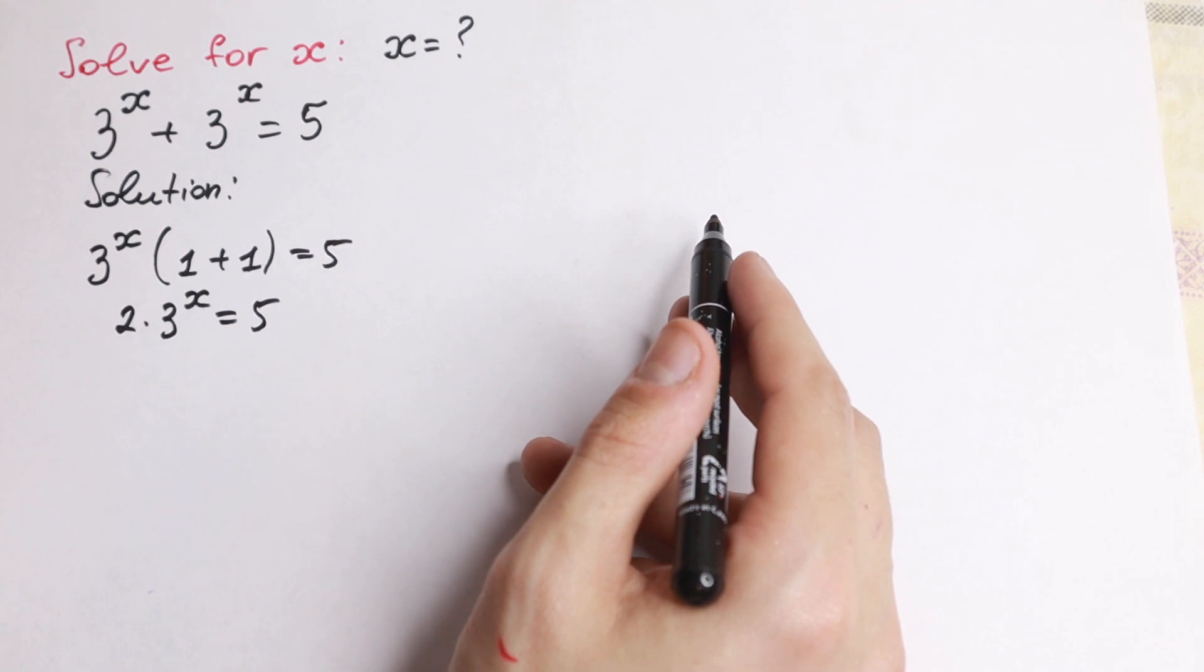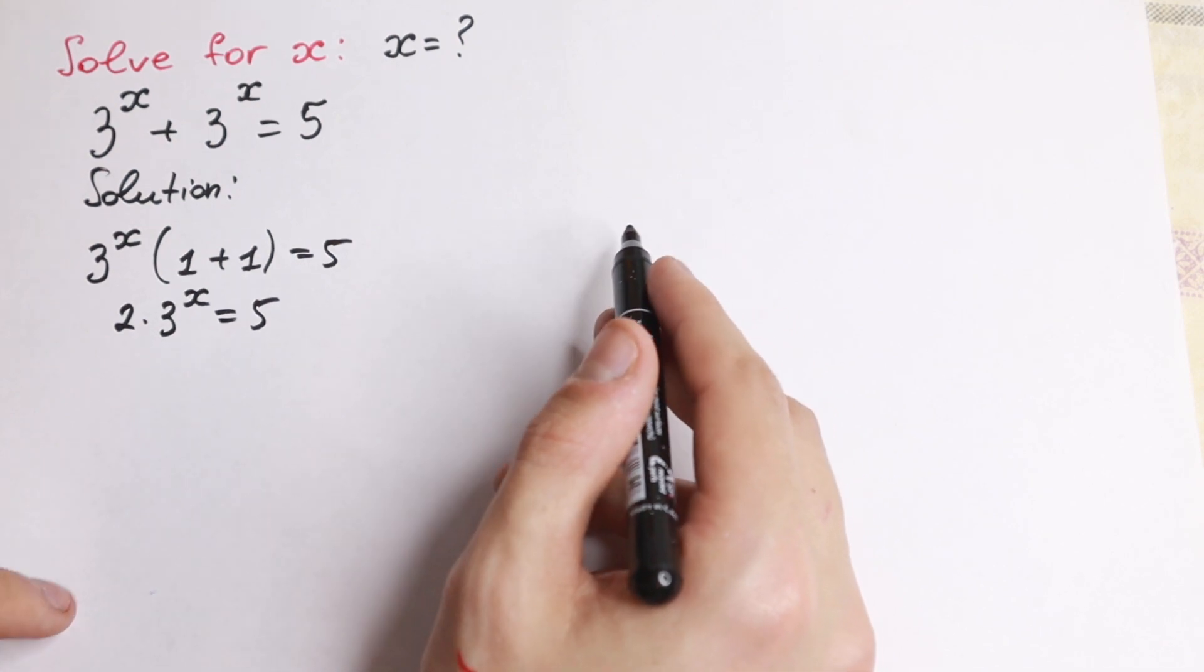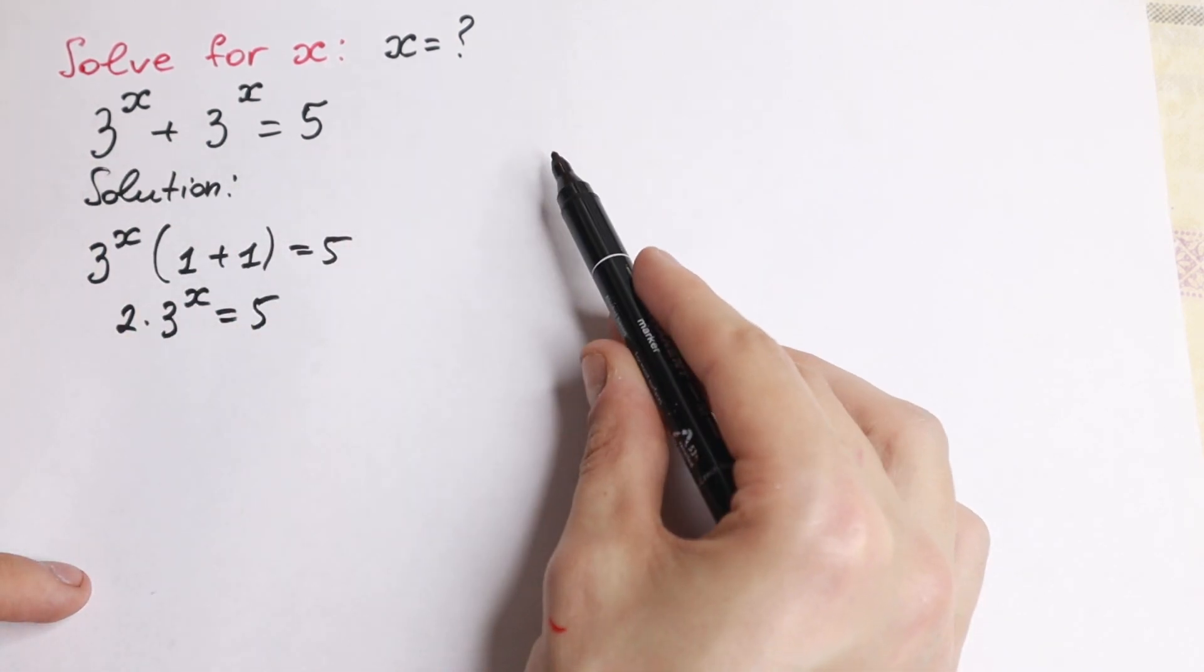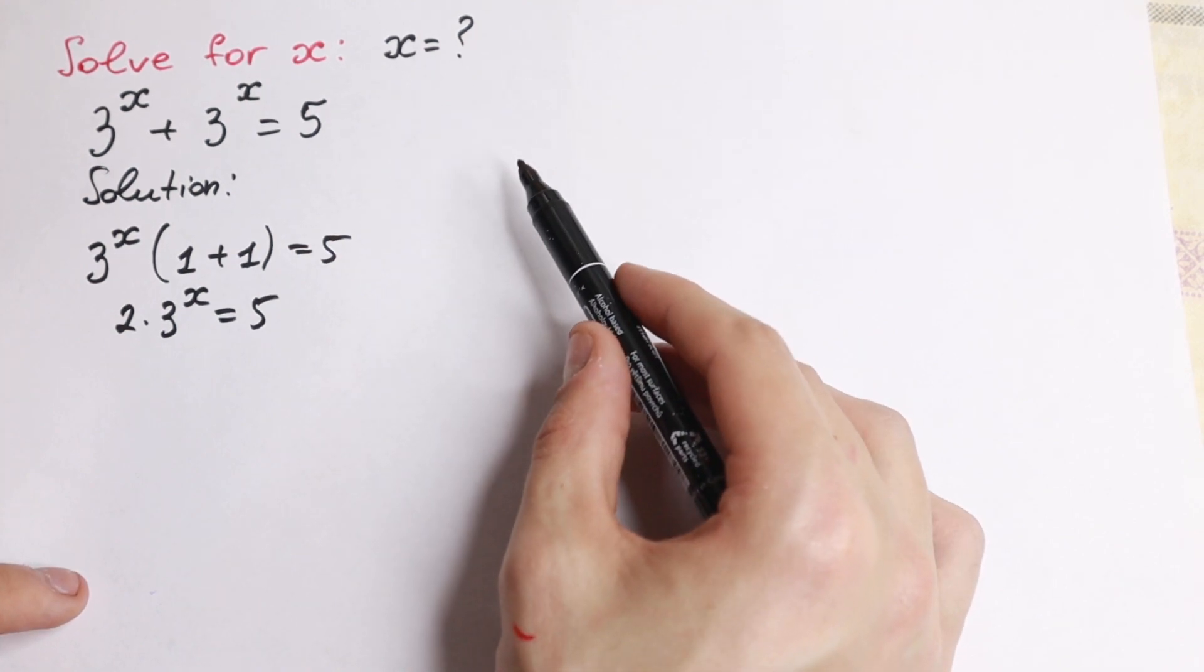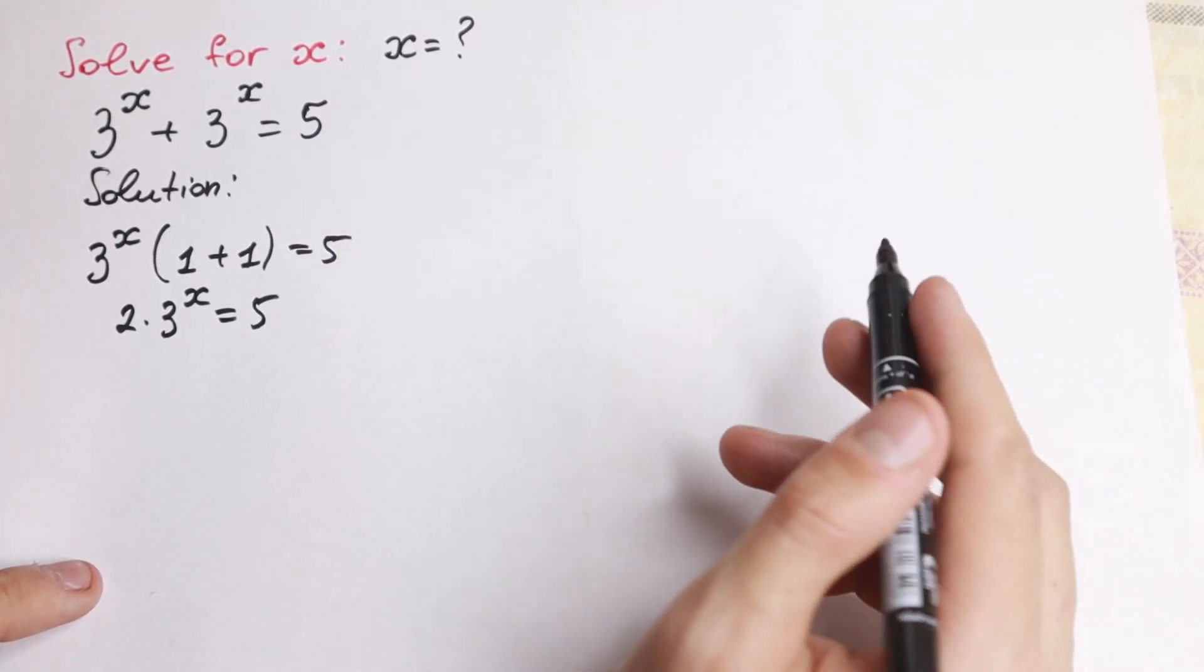So this is two same elements. If we add them, for example x plus x, we'll have 2x, but right here we have this exponent, so nothing changed for us. So let's go next, let's try to solve next.